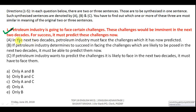Option B: 'If the petroleum industry is determined to succeed in facing challenges which are likely to be posed in the next two decades, it must be able to predict them.' This is quite close to the original. Option C: 'A petroleum industry wants to predict the challenges it is likely to face in the next two decades; it must have to face them' — this conveys a different meaning. So A and C are incorrect; correct answer is B.